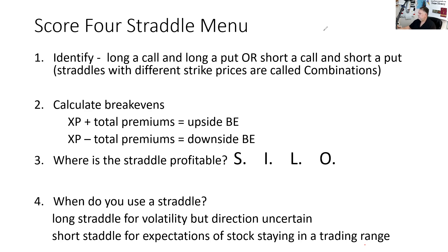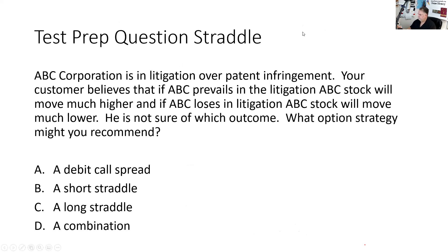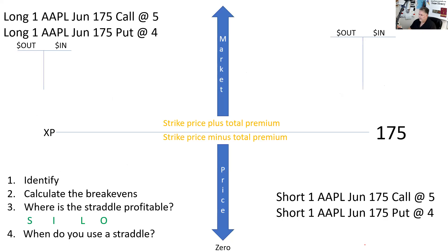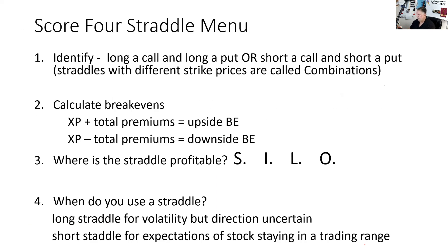Here's a bonus test prep question: ABC Corp is in litigation over patent infringement. Your customer believes that if ABC prevails, the stock will move much higher, and if ABC loses, it will move much lower. He's not sure of which outcome. The recommended strategy is C — a long straddle. This is based on a real situation where the companies settled out of court and the stock moved significantly. The max loss when buying a straddle is the premium — nine points — and the max gain for the short straddle is what you collect.